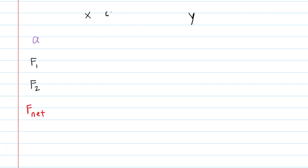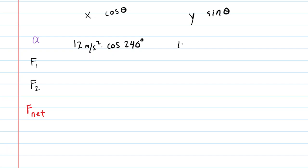For the x component, we're going to take the magnitude of each quantity and multiply it by the cosine of the respective angle. For the y component, we multiply by the sine of that same angle. For example, the acceleration had a magnitude of 12 meters per second squared, and we multiply that by the cosine of 240 degrees for the x component, and by the sine of 240 degrees for the y component.